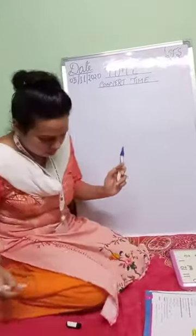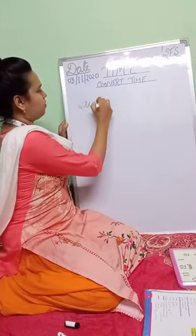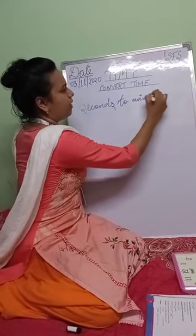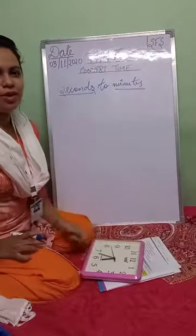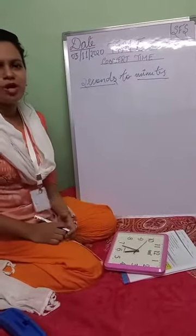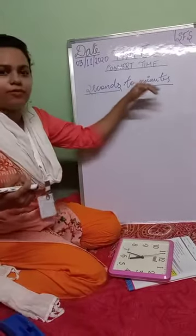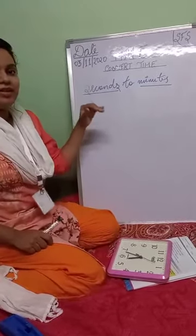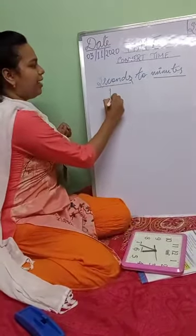Today we will learn how to convert seconds into minutes. When we want someone to do something quickly, we say 'give me two minutes' or 'two seconds.' Second is a smaller unit of time — when you say one minute it means a longer period, but one second is over just like that.